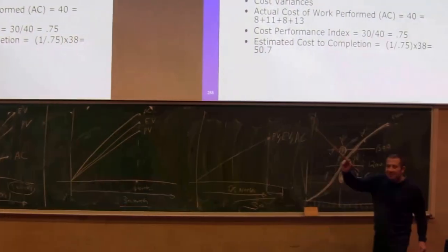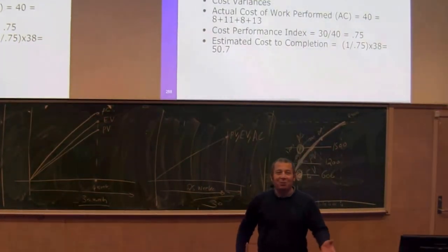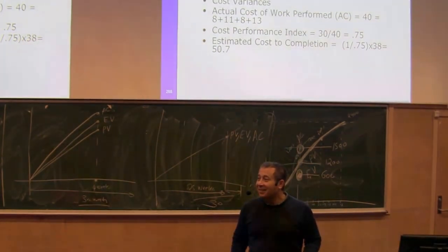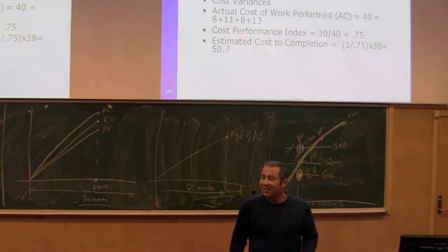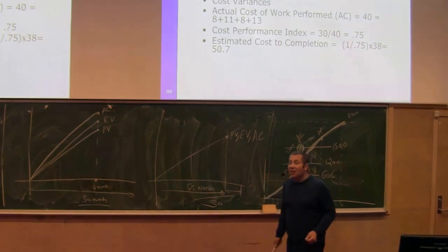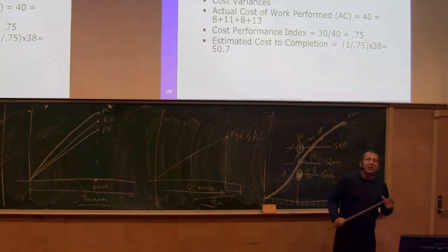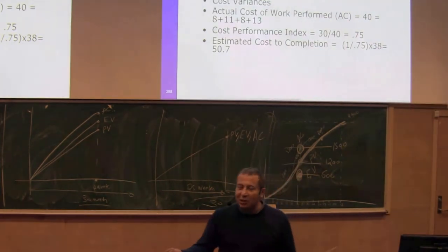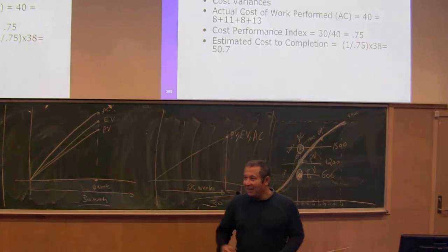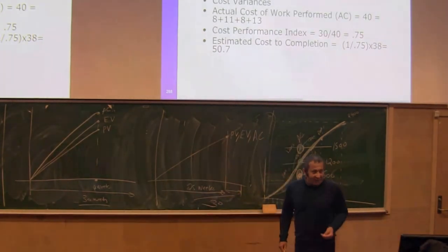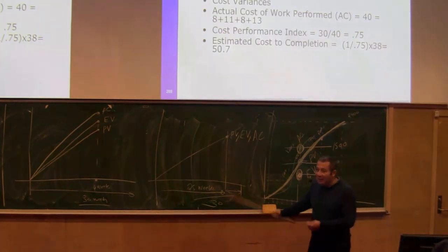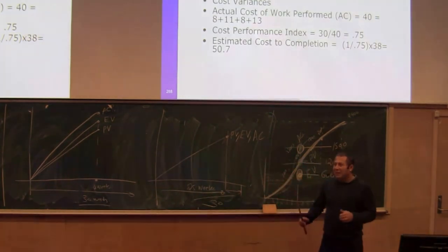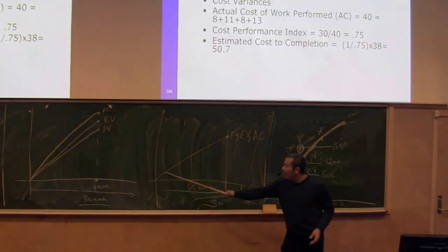For the third diagram where planned value, earned value, and actual value all coincide: that's theoretically perfect planning — you managed to use exactly the resources you said you would and are exactly where you planned to be. But in practice, this never happens. There is actually a website called 'How to Cheat on Earned Value,' and one technique is to adjust the plan to fit the measurements, which can produce a perfect-looking graph. In practice, this is almost impossible to achieve honestly.